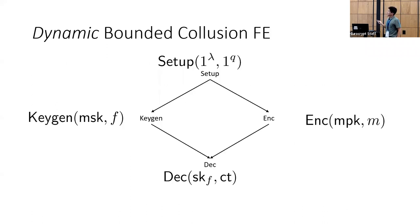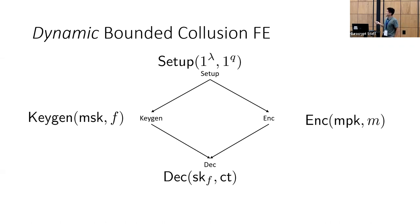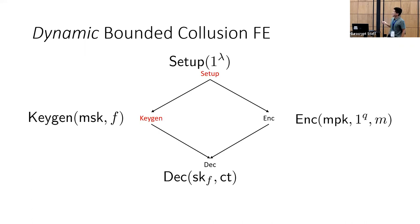This brings us to the definition we introduce in our paper: dynamic bounded collusion functional encryption. It's a pretty simple change — whereas in normal static bounded collusion functional encryption the collusion bound is specified at setup time, we instead move this collusion bound to encrypt time, since that's when your ciphertext is actually generated. Notice that now your setup and keygen algorithms have to run independently, without knowledge of this collusion bound.